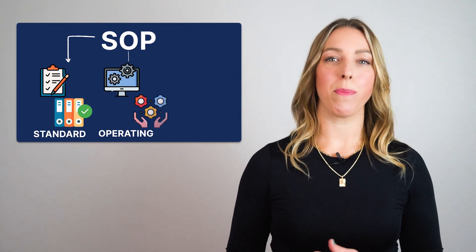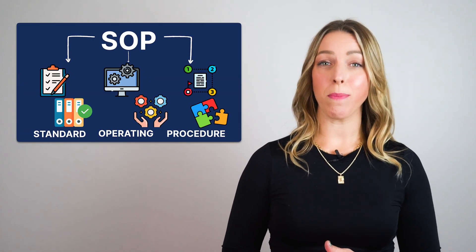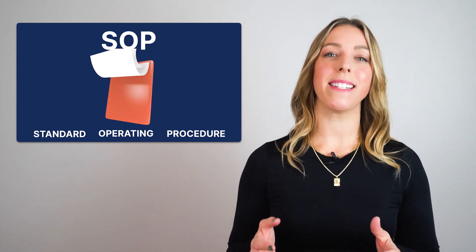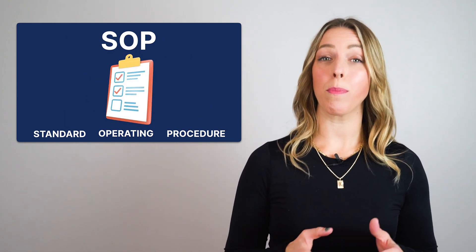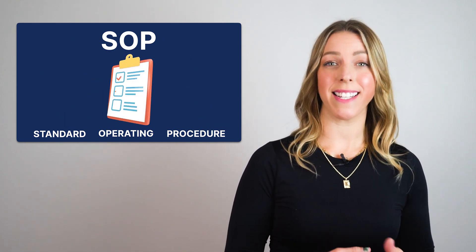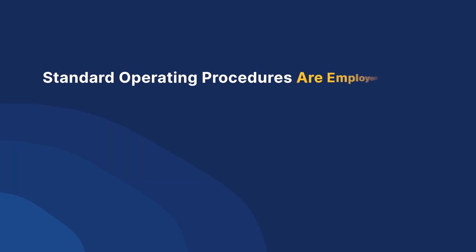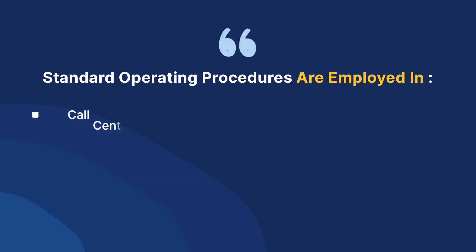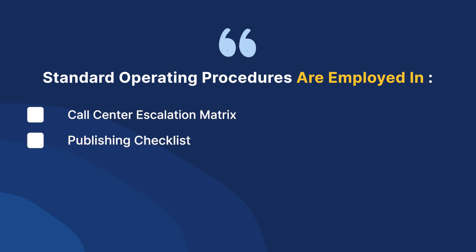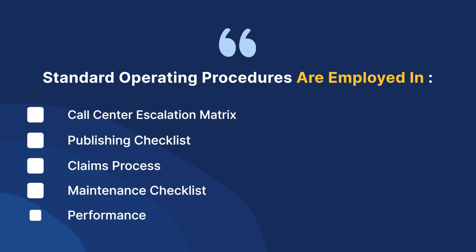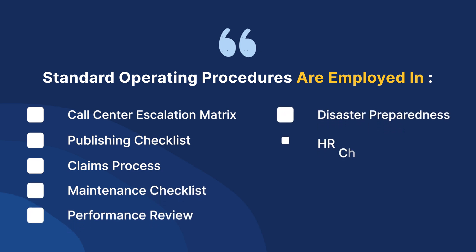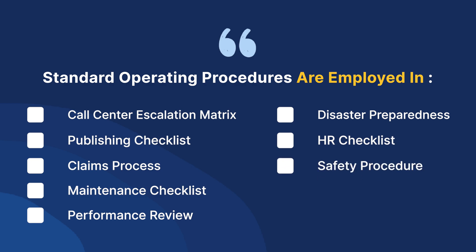A Standard Operating Procedure is a documented set of instructions that outlines the steps required to complete a task or a process consistently. Standard Operating Procedures are employed in various areas, including Call Centre Escalation Matrix, Publishing Checklist, Claims Process, Maintenance Checklist, Performance Review, Disaster Preparedness, HR Checklist, and Safety Procedure.